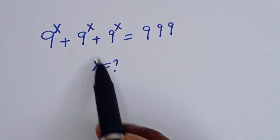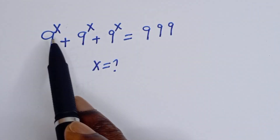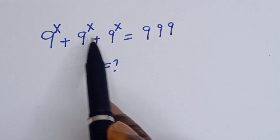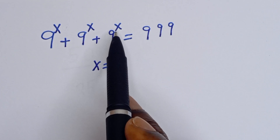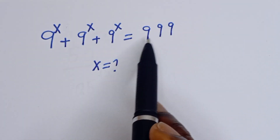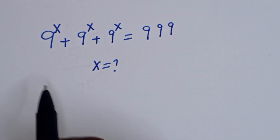Hello, how to solve for S from this given equation: 9 to the power of S plus 9 to the power of S plus 9 to the power of S is equal to 999.